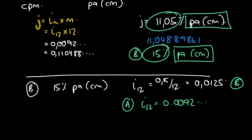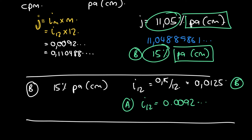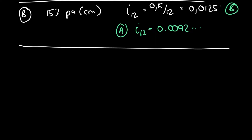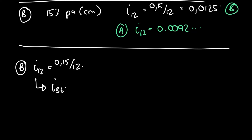Now we can compare directly: B's I12 is 0.0125, and A's I12 is 0.0092 et cetera. We take the lowest, and again we see Institution A is the one we want. We could also have converted B to I365 — taking B's I12 of 0.15 divided by 12 and converting it to I365, then converting to a nominal rate as percentage per annum compounded daily, for direct comparison with Institution A.